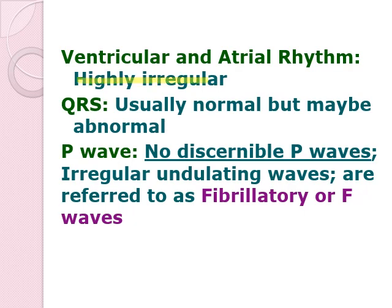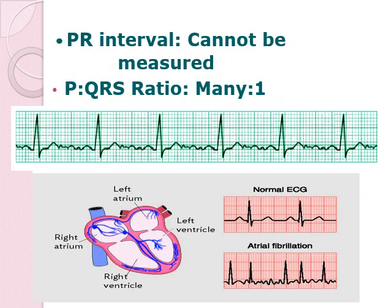It is highly irregular and disorganized. The QRS complex may be normal or abnormal. For the P-wave, it is not discernible. Unlike atrial flutter where you can see two to three P-waves and then one QRS complex, for atrial fibrillation you will be seeing only lines and then your QRS complex. The P-wave is irregular, undulating, and referred to as your fibrillatory or F-waves. F-waves are more common in atrial fibrillation than in atrial flutter. The PR interval could not be measured because you cannot see where the P-wave is. The P-to-QRS ratio is many-to-one and cannot be counted.